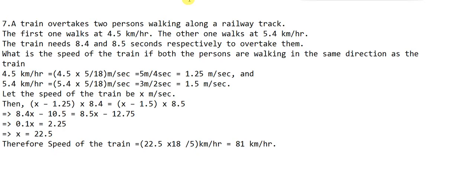But first let's discuss the homework problem I gave you in the last video on speed, distance, and time. The first question: a train overtakes two persons walking along a railway track. The first one walks at 4.5 km/h and the other at 5.4 km/h. The train needs 8.5 and 8.4 seconds respectively to overtake them. What is the speed of the train if both persons are walking in the same direction as the train?